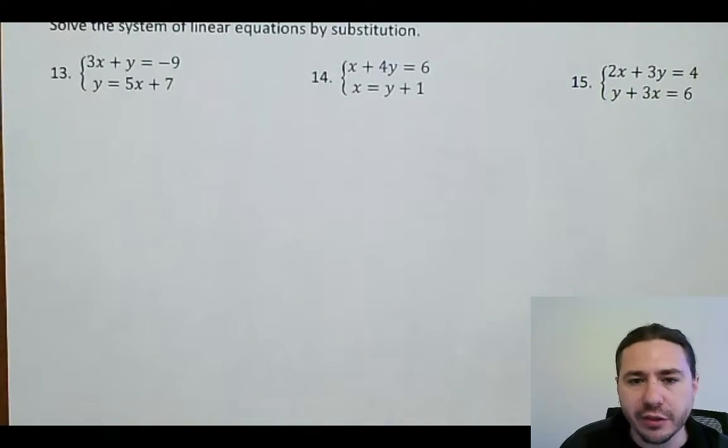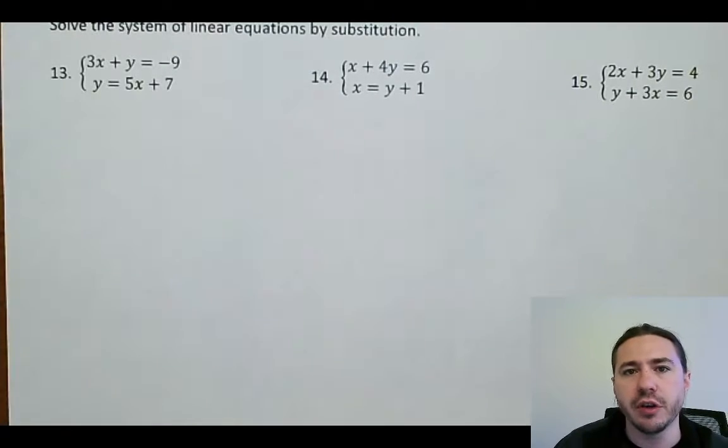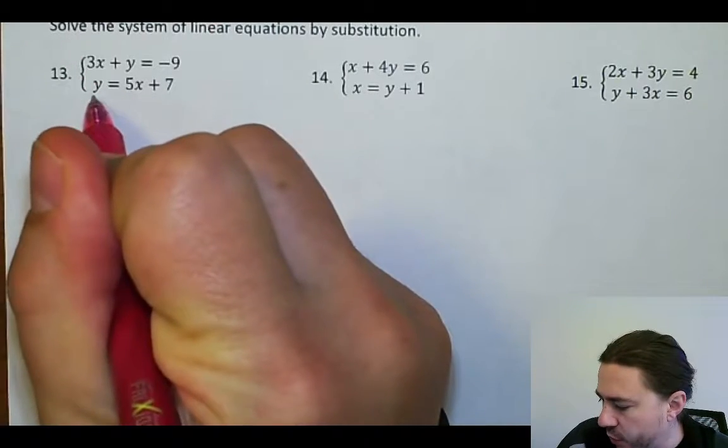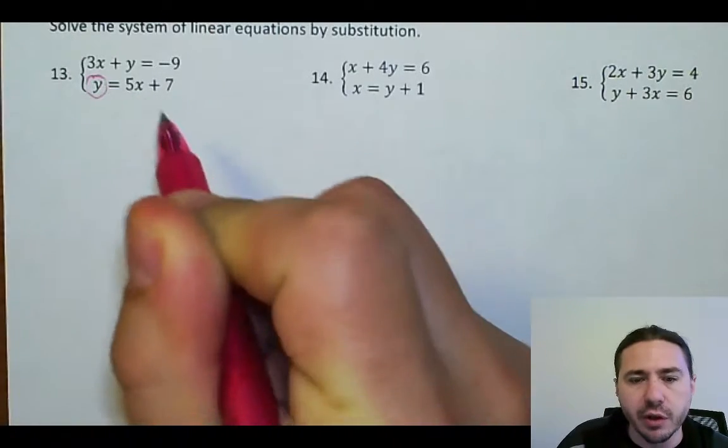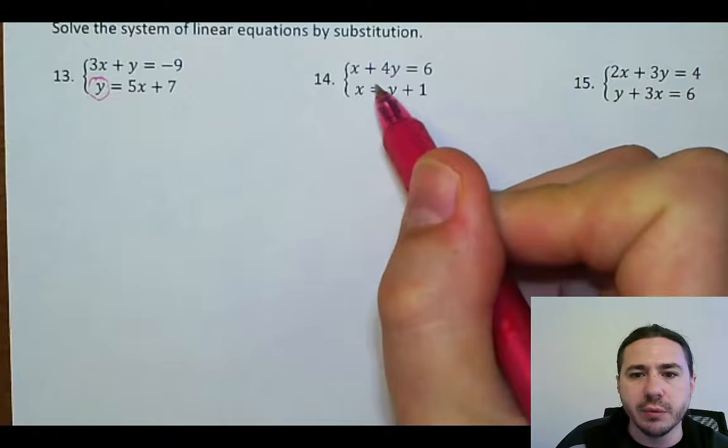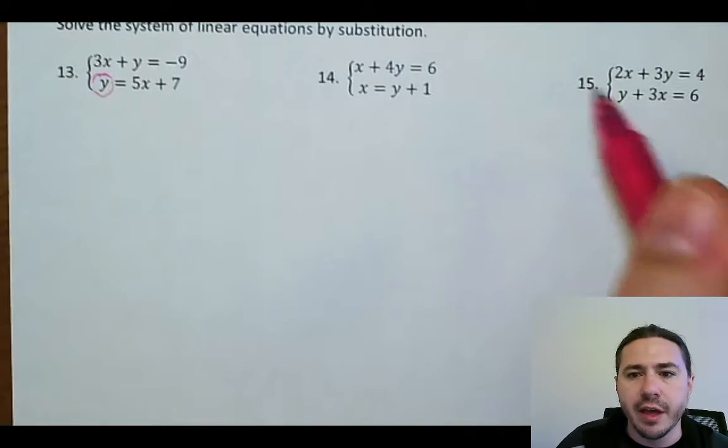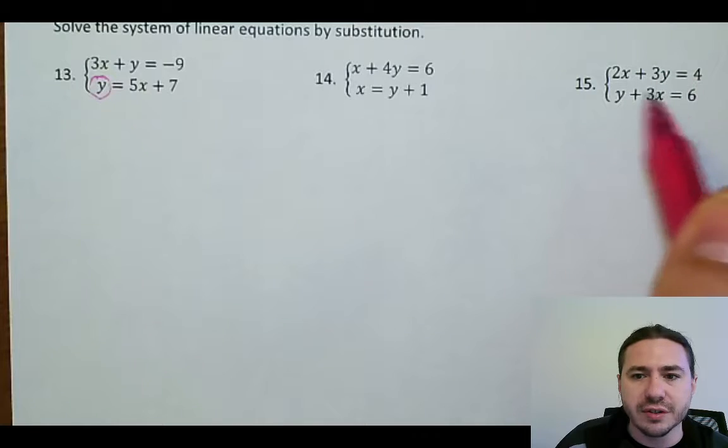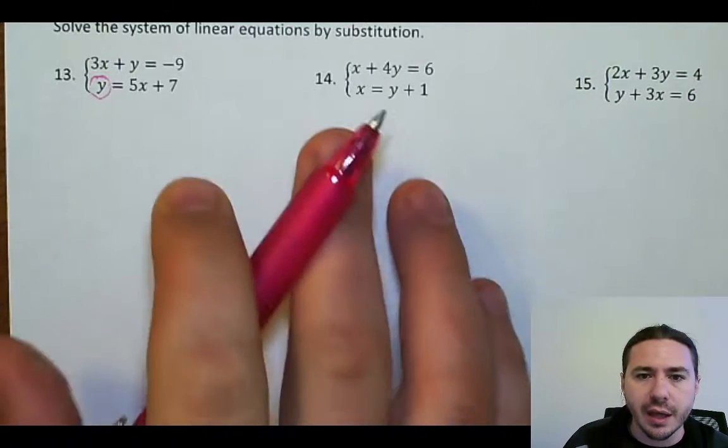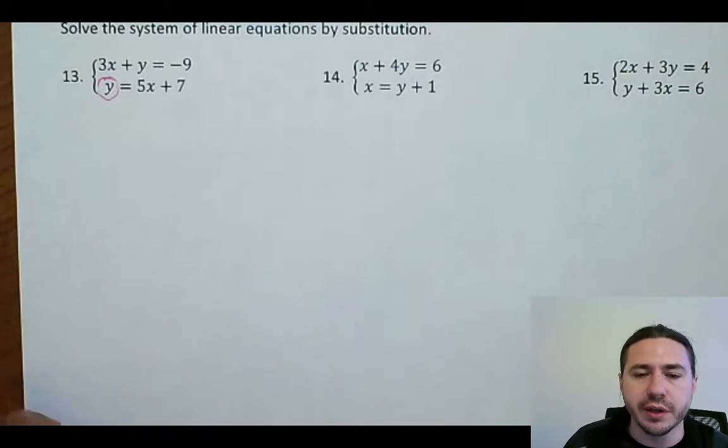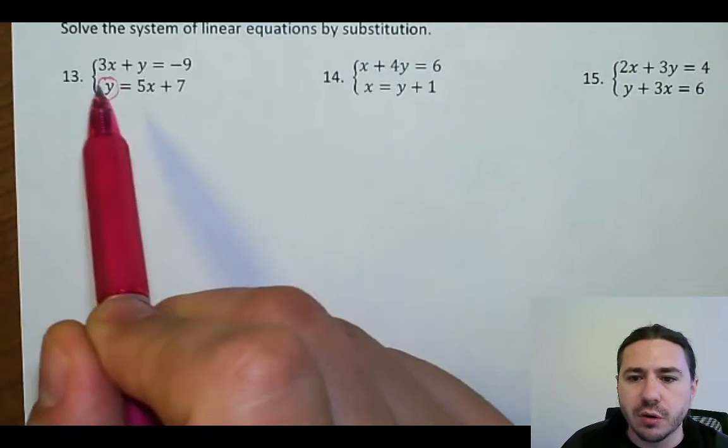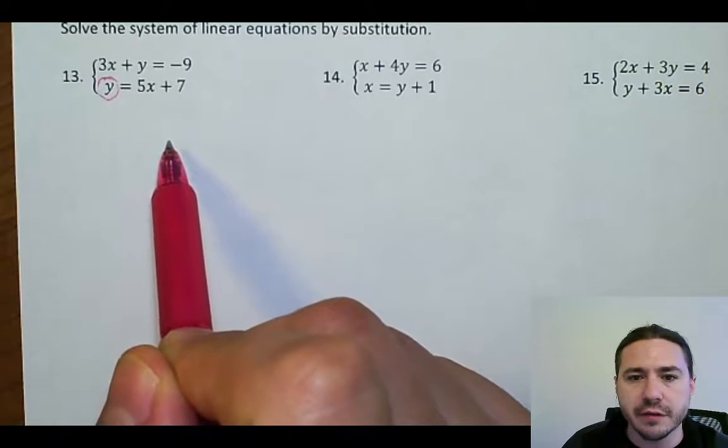So the way that this works is first you need one of the equations to have a variable isolated. So notice how in this second equation, the y is all by itself in one of the equations. In 14, we can see that x is by itself. In 15, nothing is by itself, so we're going to have to do a little extra step to force that to happen. So there'll be one extra step when we get to 15. So let's start with 13, though, and I'm just going to work slowly through this method of substitution.